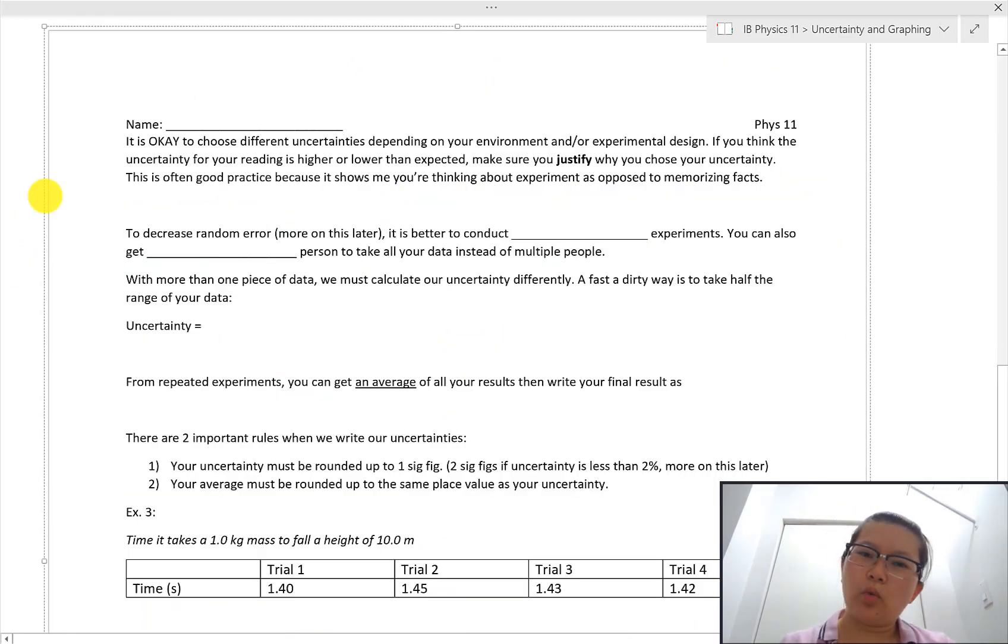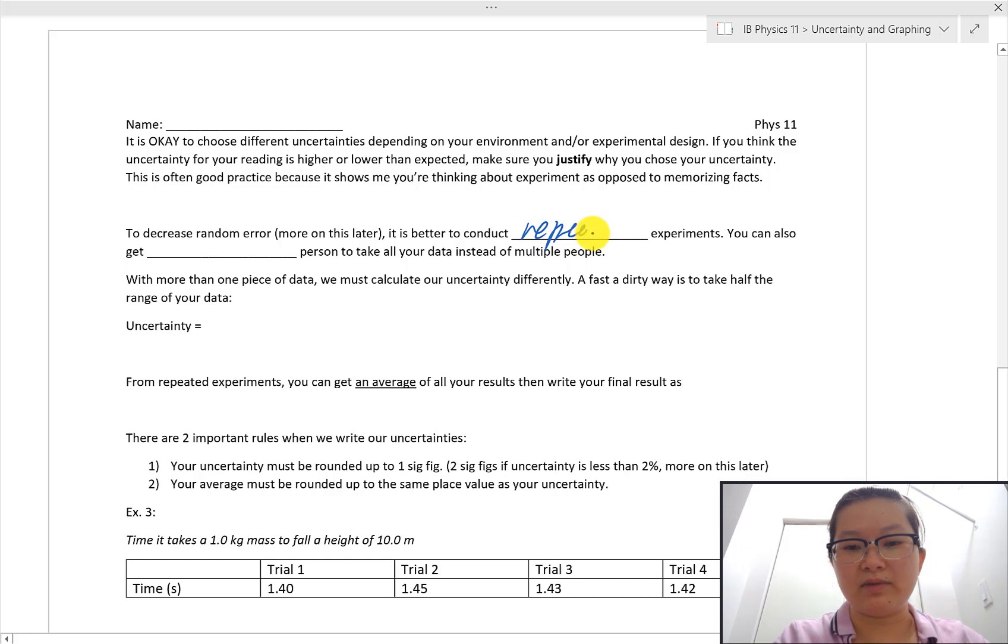So why would you ever want to make repeated measurements? Let's say you made one single measurement and something went wrong in that particular experiment. If you have repeated measurements, the impact of that single measurement becomes less and less. So you look at your data as a whole as opposed to just that single one. Because of that, it is able to reduce your random error, making your measurements more precise. So it's a good way to help build precision in your data set. Always good to conduct repeated experiments.